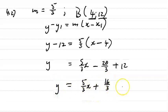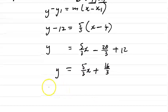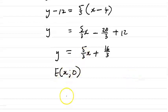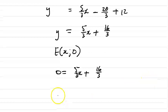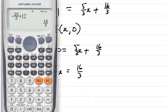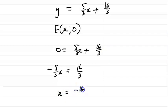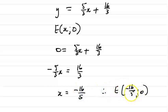The equation of the line is y equals 5 over 3x plus 16 over 3. Since E is an x-intercept, y equals 0. Substituting: 0 equals 5 over 3x plus 16 over 3. Solving for x: minus 5 over 3x equals 16 over 3, so x equals minus 16 over 5. Therefore, the coordinates of E are (minus 16 over 5, 0).